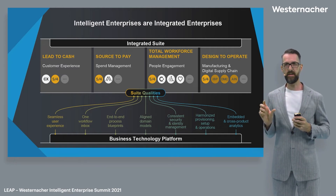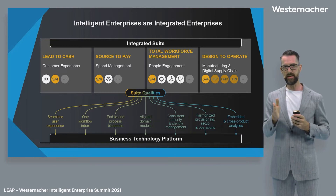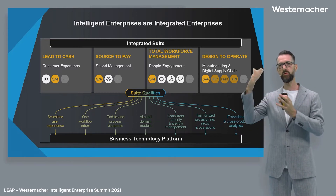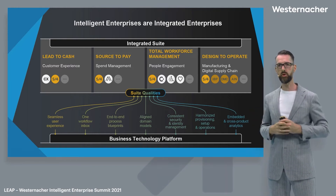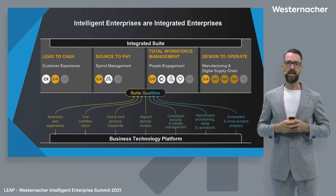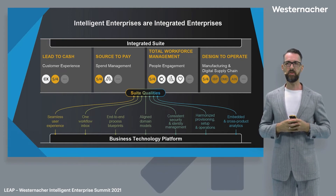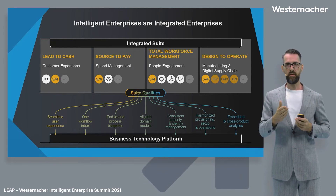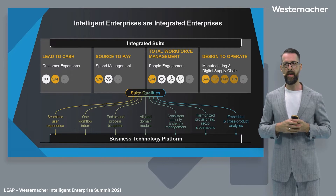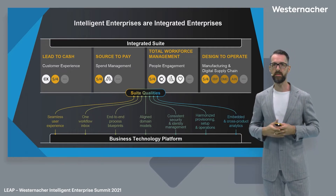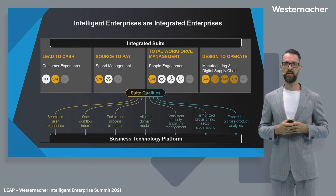These reference architectures expose the business capabilities and map them to solutions. So we have business capabilities and a business solution model. In the end, we provide customers the opportunity to select the reference architecture, select the processes they want to run in the cloud or in SAP S4HANA, and then map it towards the solutions that need to be integrated.